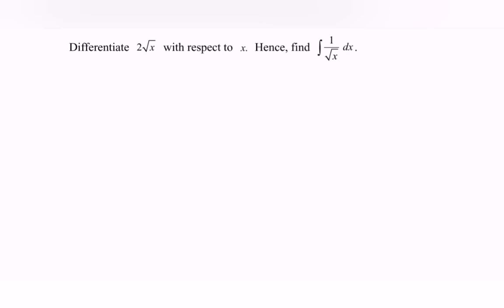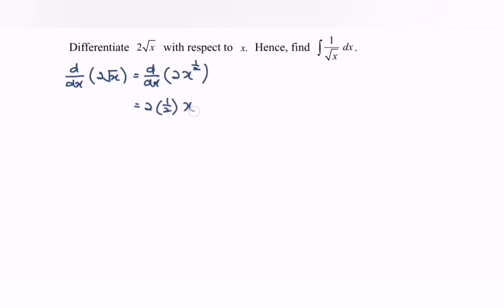Part 1: differentiate 2 square root of x with respect to x. Rewrite as 2x to the power 1 over 2. Differentiate: 2 multiplied with 1 over 2, x to the power of 1 over 2 minus 1. Simplify and we will have x to the power of negative 1 over 2. Rewrite and we will have 1 over square root of x.